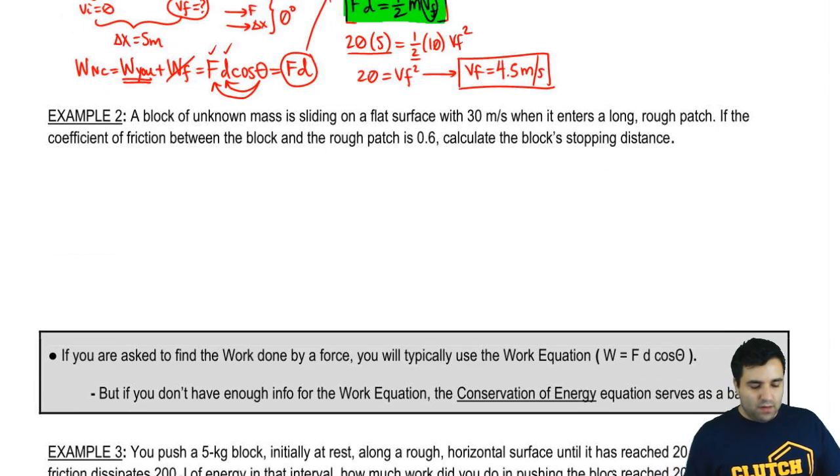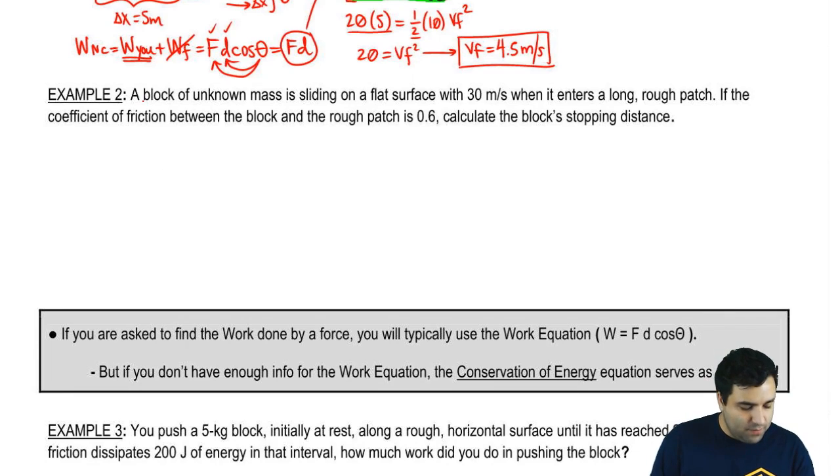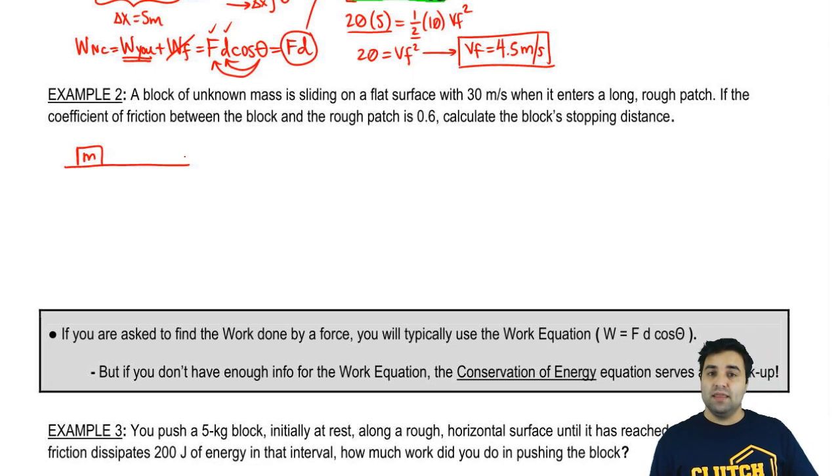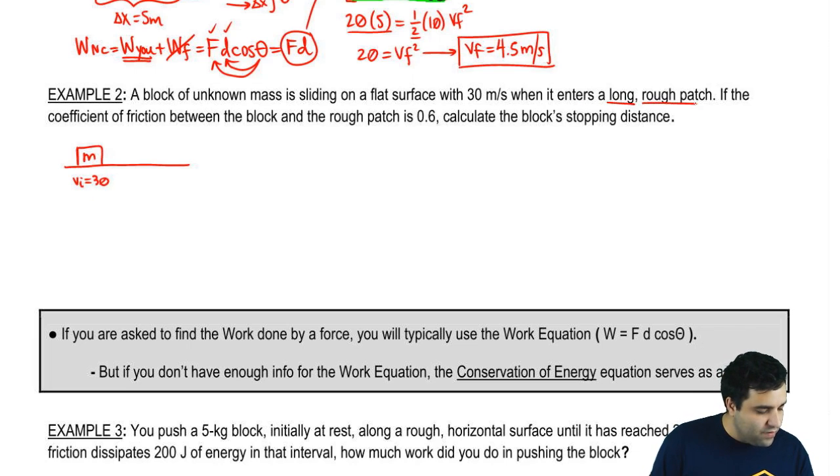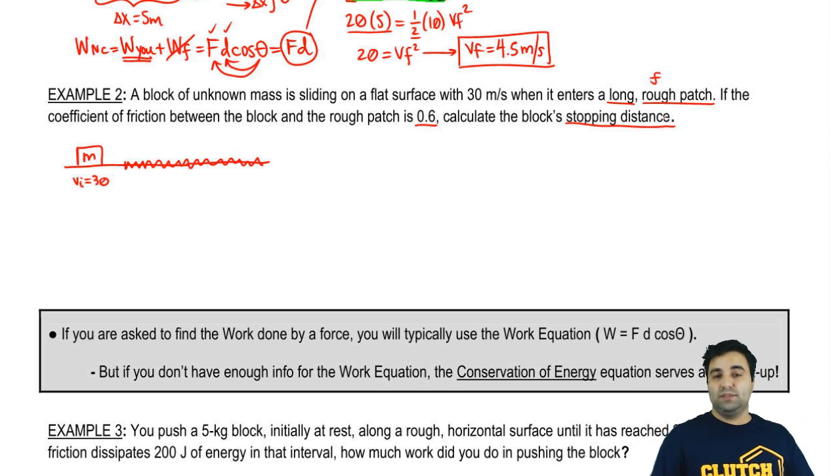I'm going to jump to a second example here. It says a block of unknown mass - we don't know the mass, but that's okay because as you've seen with a lot of these energy questions, the mass will cancel. It's sliding on a flat surface with an initial velocity of 30 m/s when it enters a long rough patch. It's a rough patch, which means there is friction - kinetic friction. If the coefficient of friction is 0.6, calculate the block's stopping distance. In other words, how long will it move along this path until it stops? If I'm asking for stopping distance, it implies that it stops. So the final velocity will be 0.